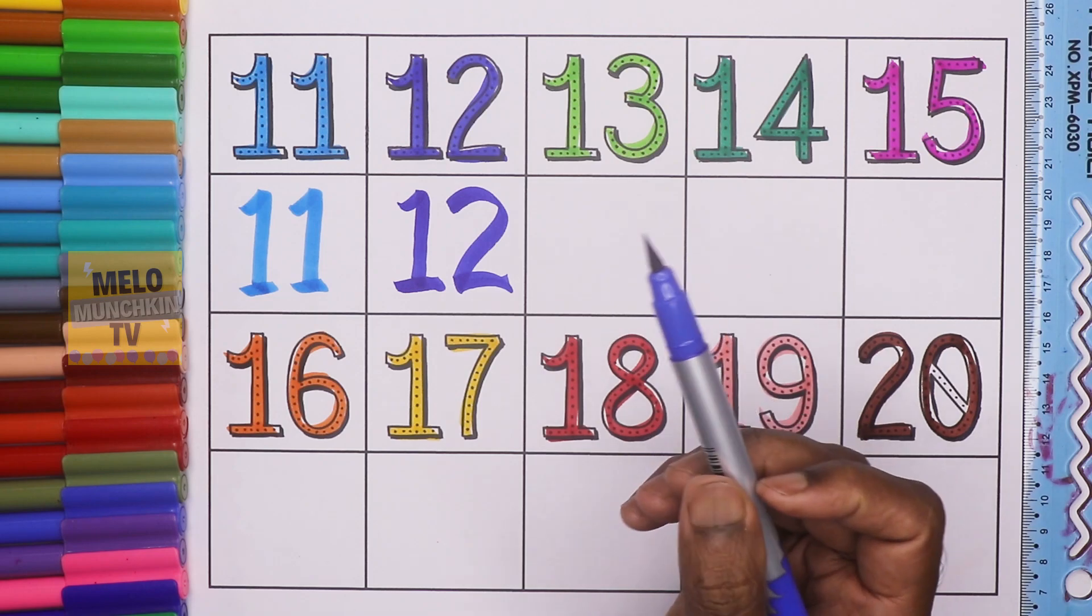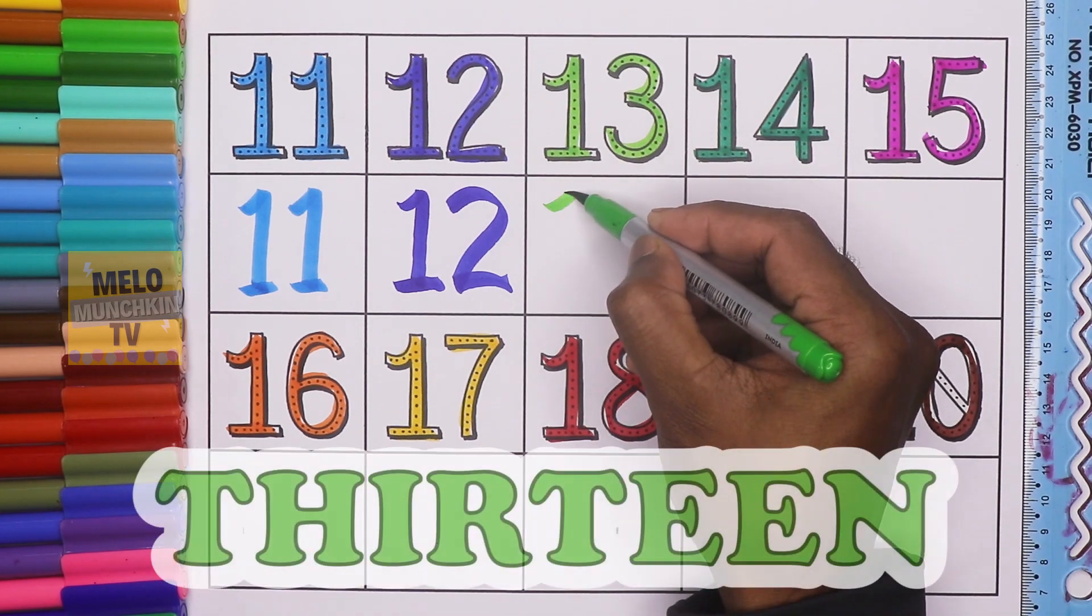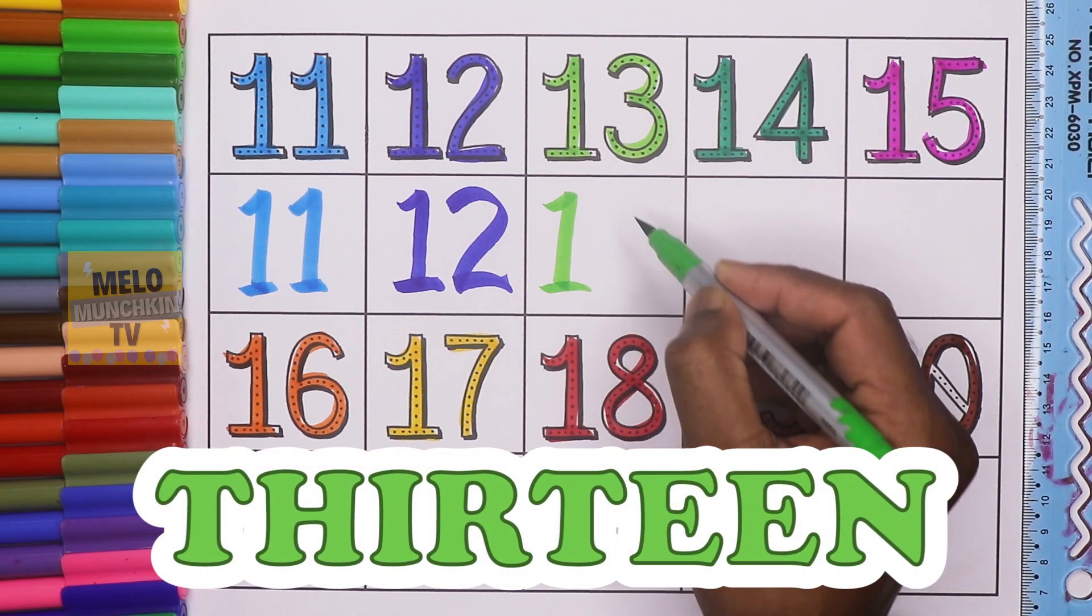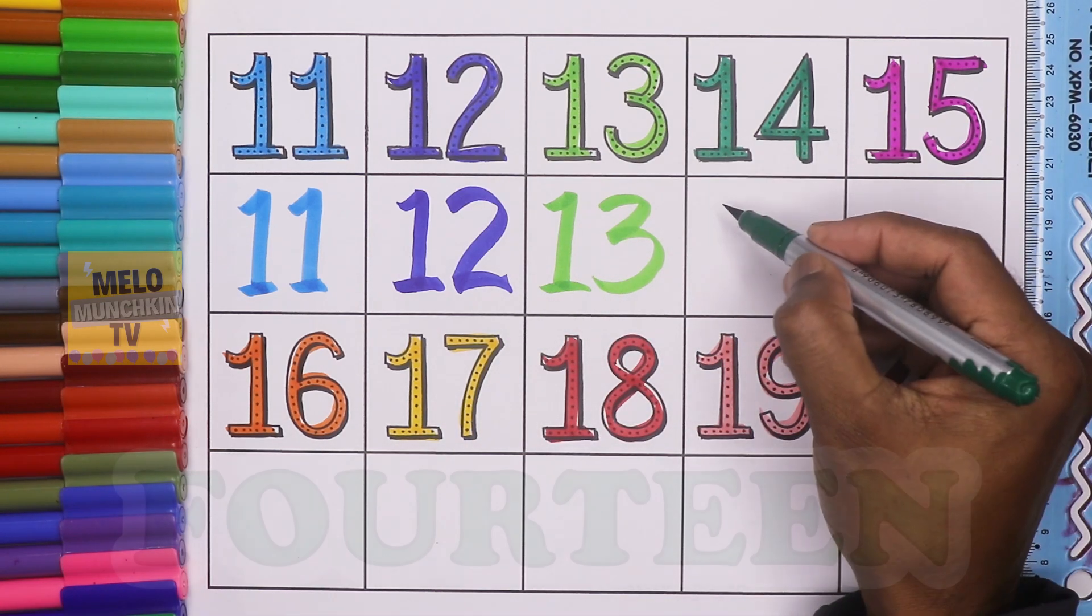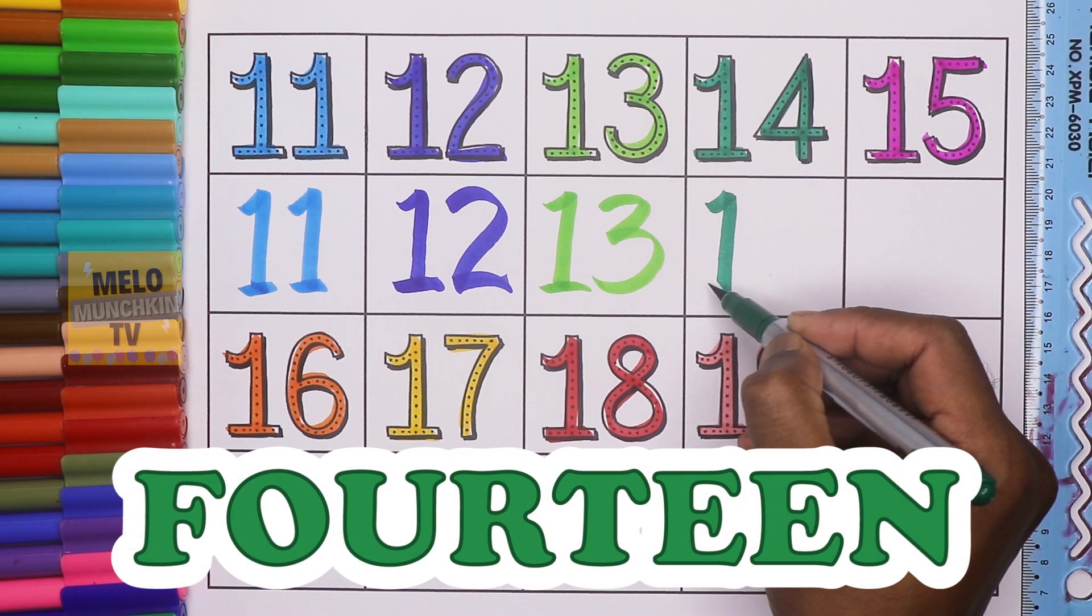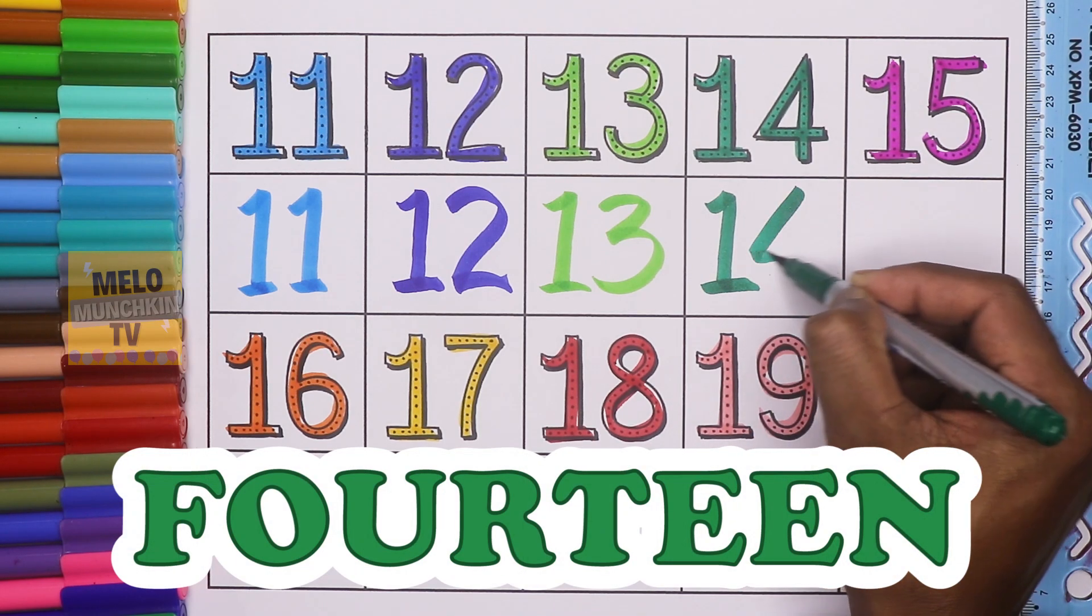This is dark blue color. 13, T, H, I, R, T, E, N, 13. This is light green color. 14, F, O, U, R, T, E, N, 14.